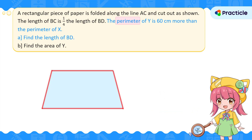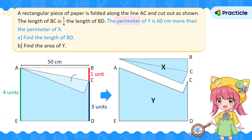Let's simplify the problem by writing down what we know about the sides of X and Y. From the diagram, we can tell that this length of the paper is 50 centimeters. Since the paper is a rectangle, the opposite side ED must also be 50 centimeters. Remember that X is made up of two equal triangles — if this side is 50 centimeters, this side will also be 50 centimeters, and this side will be 50 centimeters as well because the shape is cut from the same side.